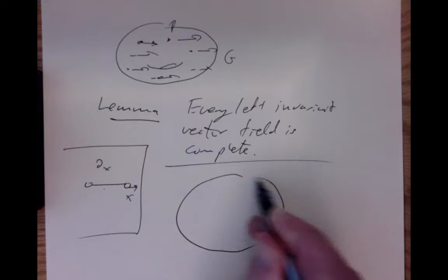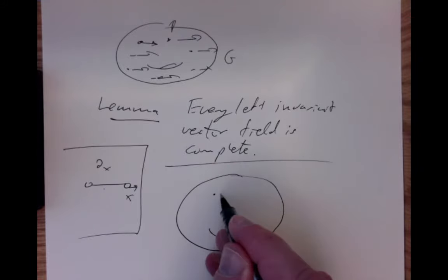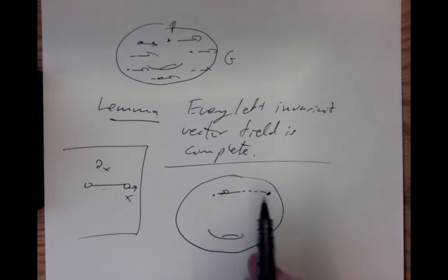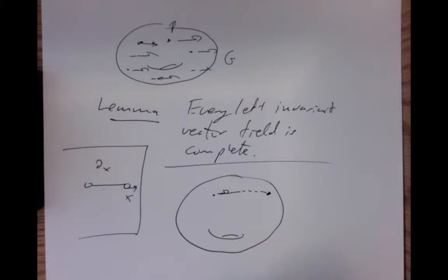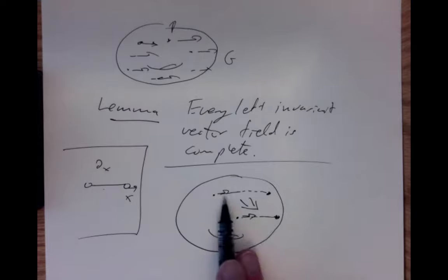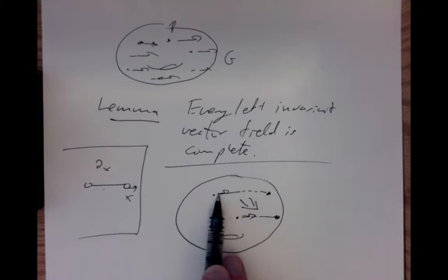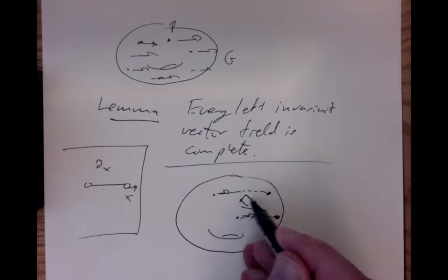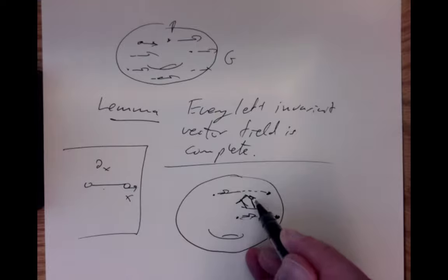The reason is geometrically clear. If you take the left-invariant vector field and follow along a flow line for some time, you can left-translate the whole flow line. You get the same vector field, and you get the flow line defined for the same time. So the amount of time during which the flow is defined is the same everywhere — wherever you are, because left-translation matches them up and left-translation inverse reverses the picture.